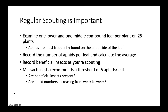Regular scouting for aphids is important. Examine one lower and one middle compound leaf per plant on 25 plants — you'll most often find aphids on the underside. Record the number of aphids per leaf and calculate the average per leaf. Also look for beneficial insects while scouting. Massachusetts recommends a threshold of six aphids per leaf. The key question is: are you seeing any beneficials? If aphid populations are building and you're not seeing beneficials, that factors into your decision whether to spray. Also ask: are aphids increasing from week to week?